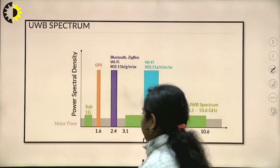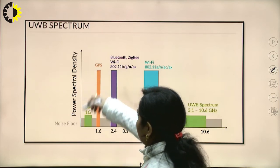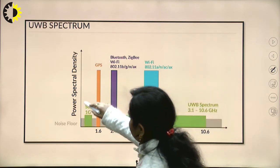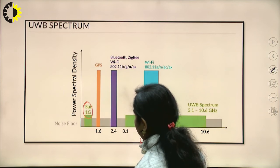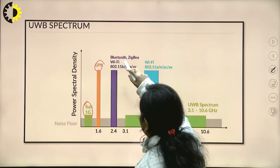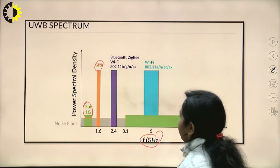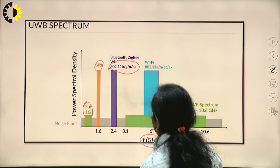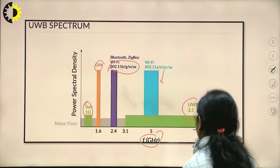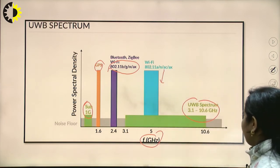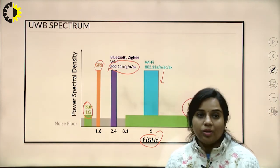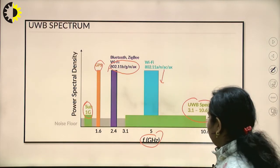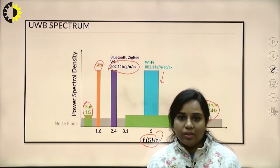This is the UWB spectrum diagram showing power spectral density versus frequency in GHz. It shows first generation, GBPS, Bluetooth, ZigBee, Wi-Fi, and the various IEEE 802.11 standard variations. The UWB spectrum lies from 3.1 to 10.6 GHz, above the Wi-Fi and Bluetooth bands. This means UWB operates at a gigahertz range frequency greater than first generation technologies.